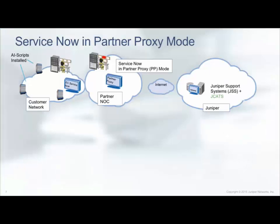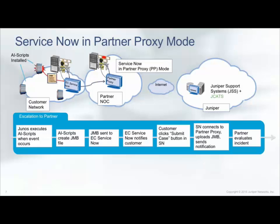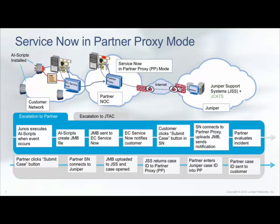Juniper partners looking to provide additional value-added services to their end customers can deploy ServiceNow in a partner proxy mode. End customers will connect and escalate incidents to the partner. Partners can then work directly with their end customers and have troubleshooting information immediately available, or if needed, escalate the incident to JTAC for additional assistance. Both the end customer and the partner will need their own instances of Space and ServiceNow with identical versioning. Service Insight will not be enabled on the end customer system. Partners will have the opportunity of providing end-of-life and proactive bug notification reporting for their end customers. Juniper partners must contact Juniper Networks to enable back-end communications for incoming partner proxy connections.